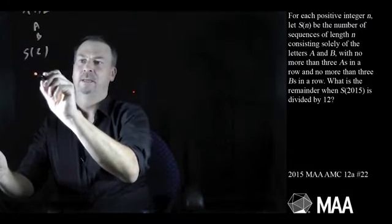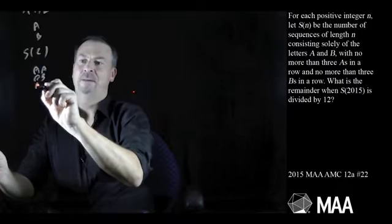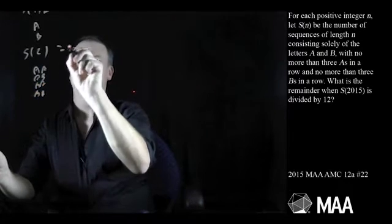S(2) could either be AA, AB, BA, BB, okay, there's four of those.